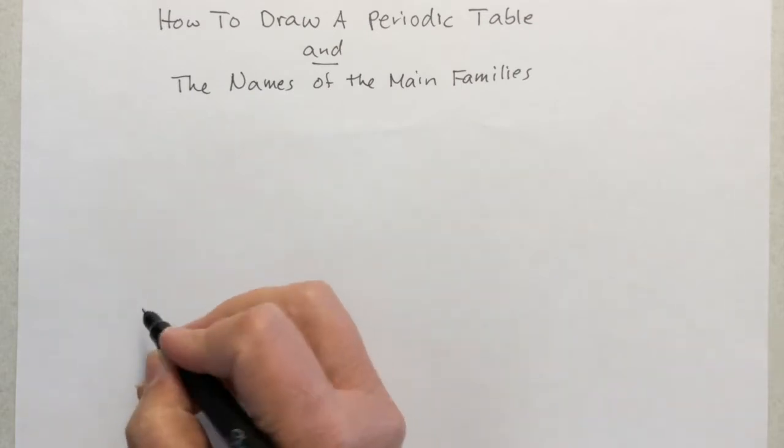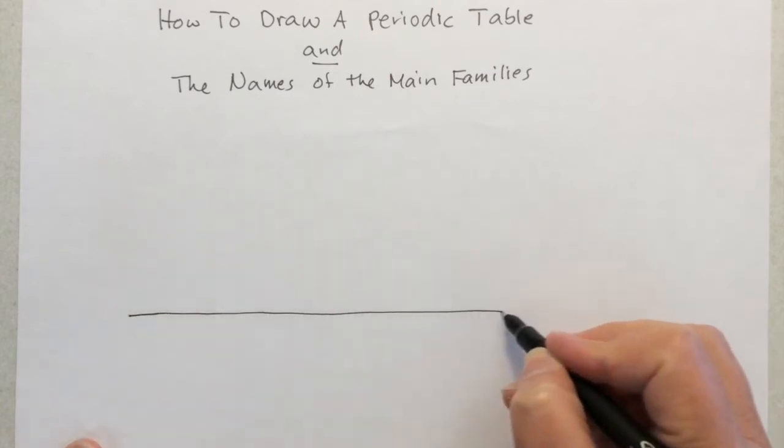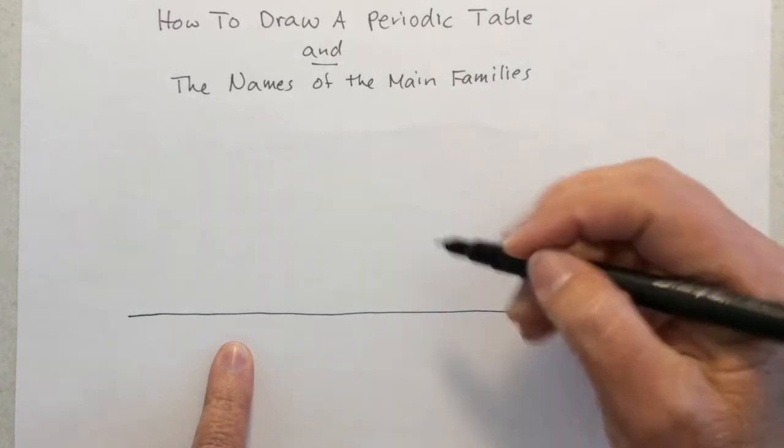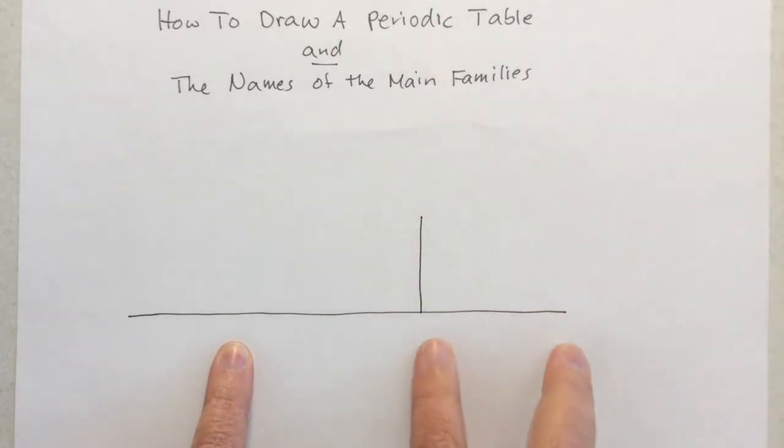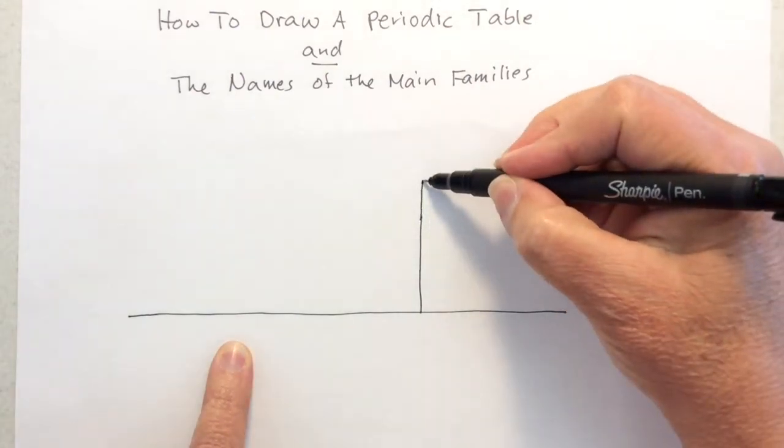To start out, draw a line and leave some space below because we'll be using this in a minute. Doesn't matter how long you make it, but that's going to be our guide for the rest of this. Then mentally divide this line into thirds and choose the right hand third. Draw a line up that's the same distance as the bottom third that you estimated there.